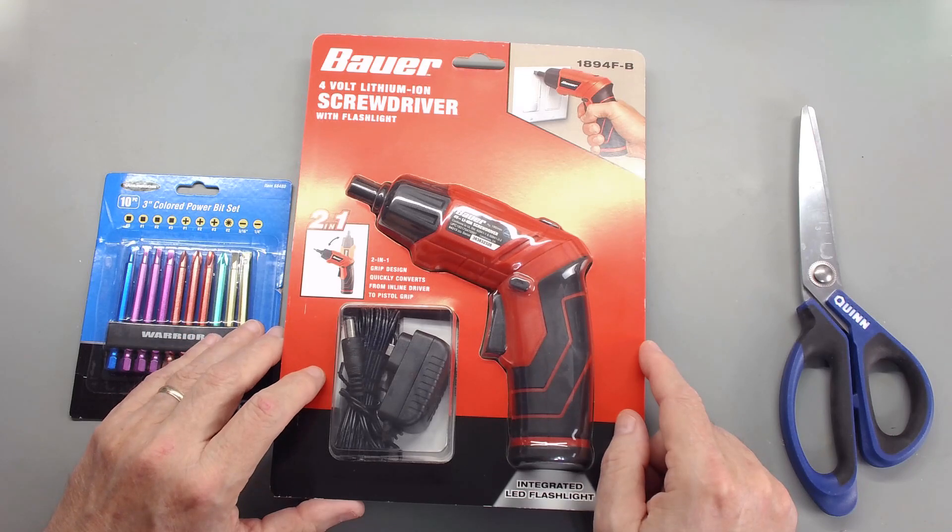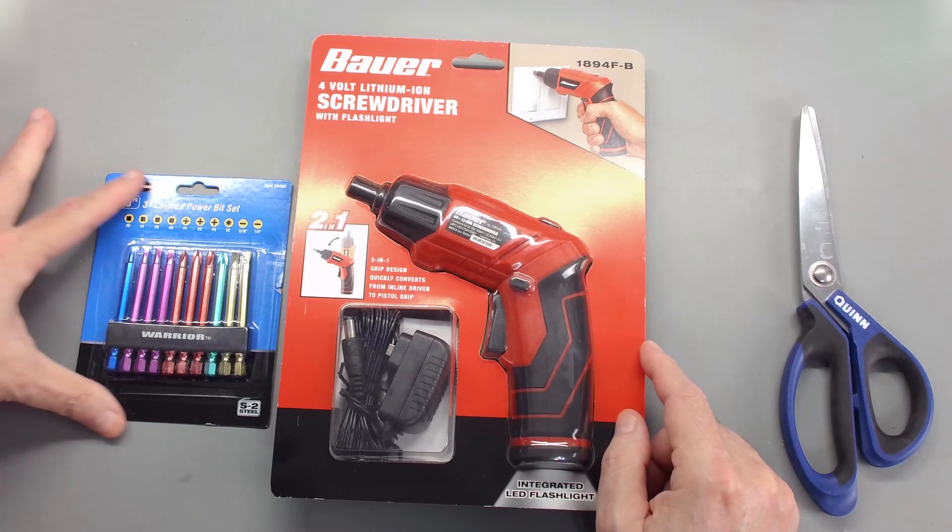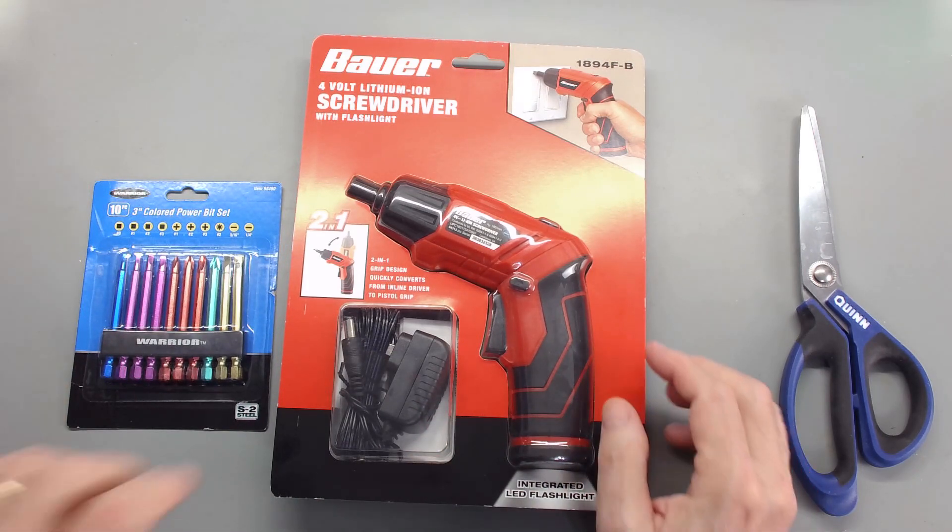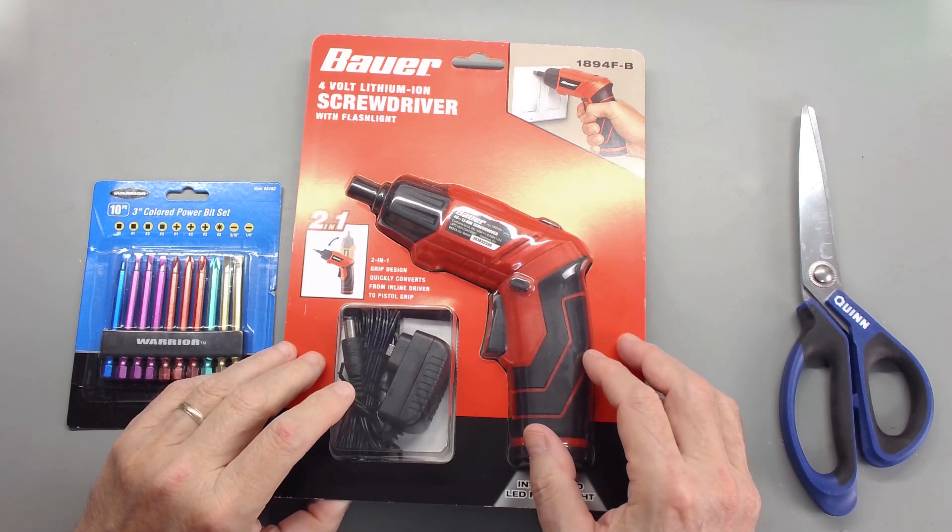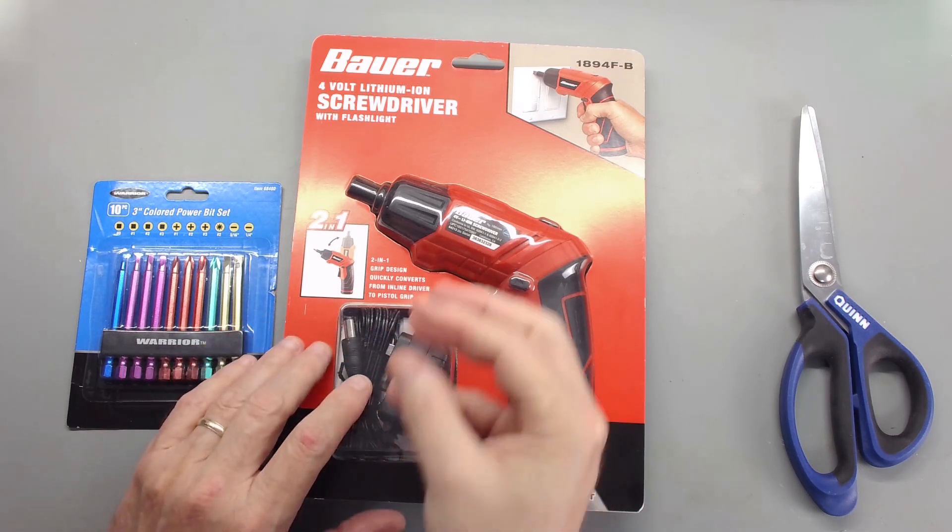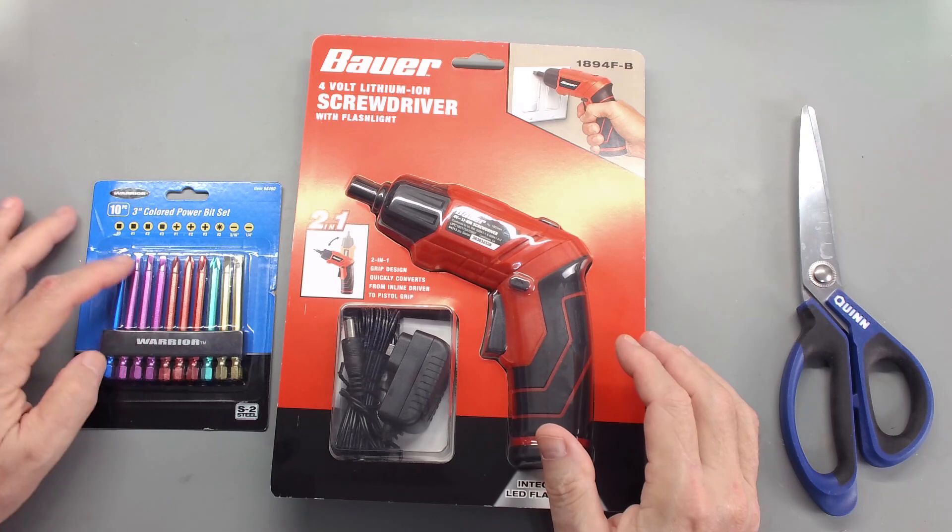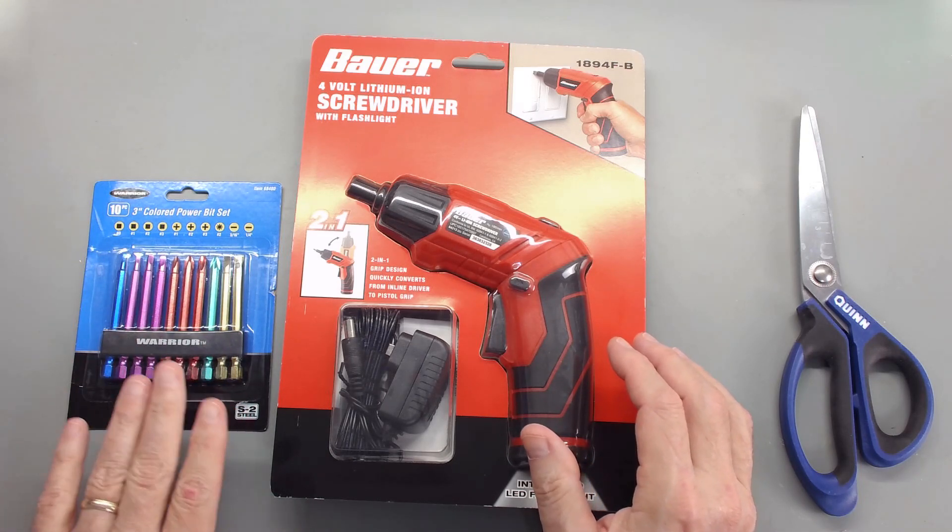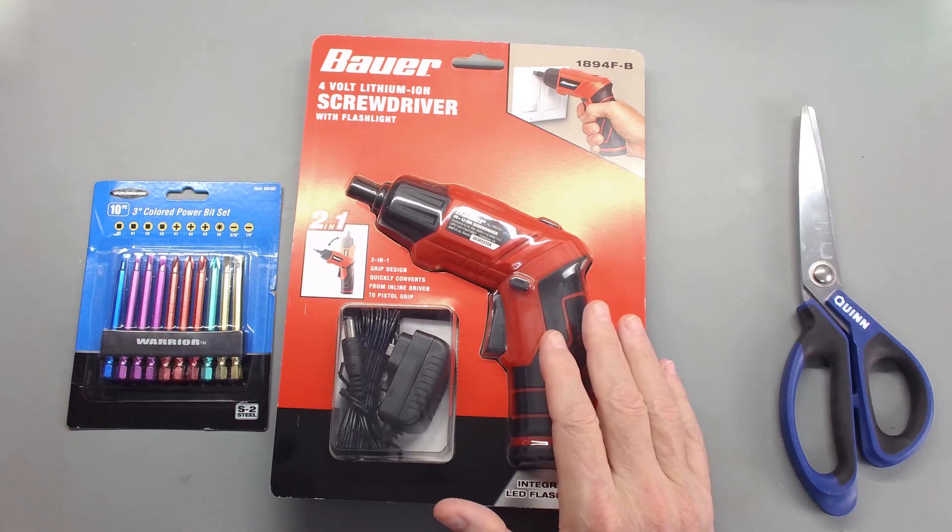It comes with some real short little bits which, if you've ever worked with electric screwdriver or impact driver, you know that oftentimes you can't get to the screw because your screwdriver is hitting or whatever. So they had a longer set, I picked up a set of these, they were only a few bucks to give me a little bit of reach.